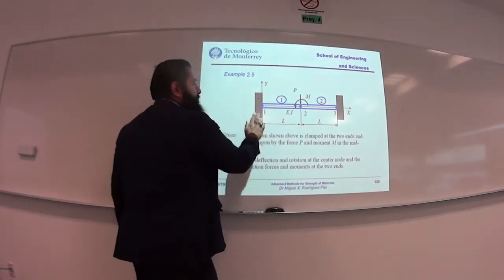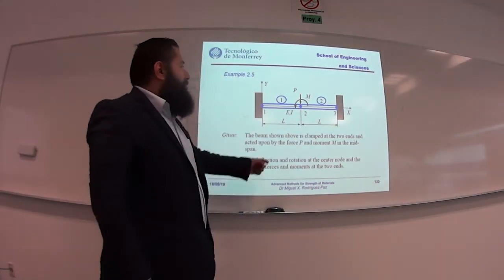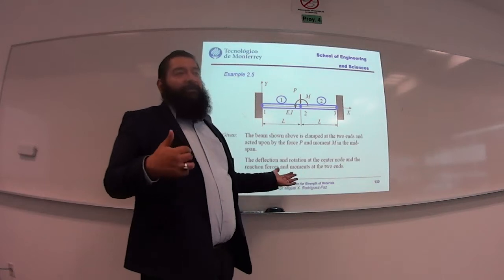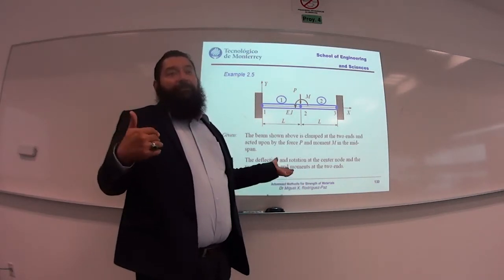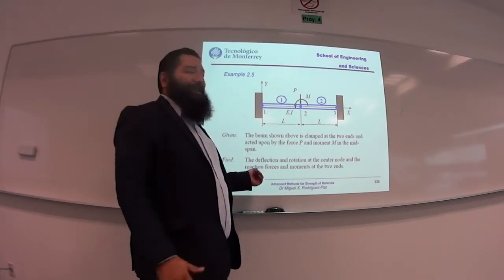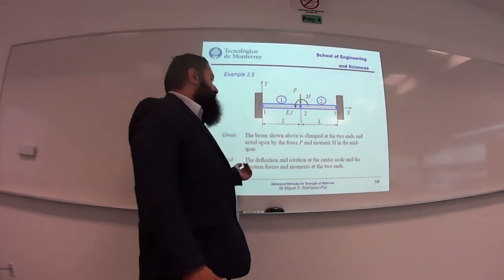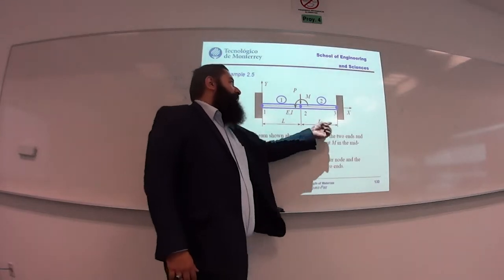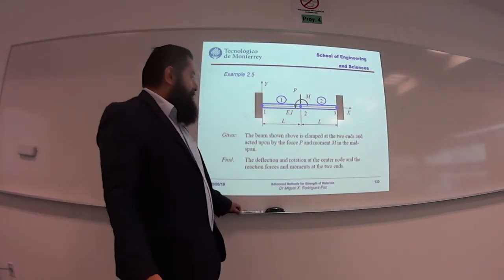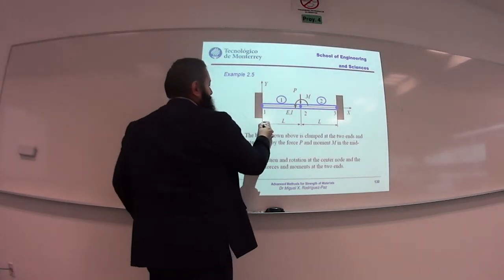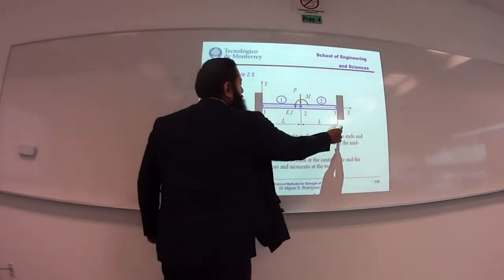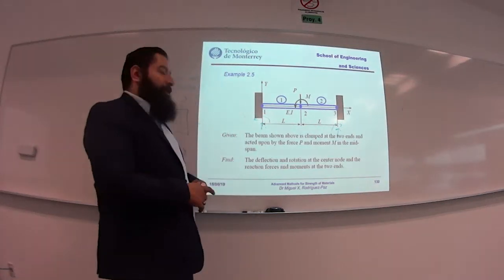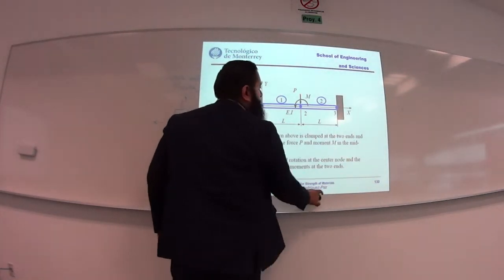We have two elements, two supports, one internal node, a moment applied there, and also an external force P. This is a statically indeterminate problem — we cannot solve it by hand using just statics. You will see how easy it is to solve it with the finite element method. The goal is to find the deflection and rotation at the center node, and the reaction forces and moments at the two ends. Using the beam element without axial rigidity, we have one vertical reaction and one moment at each end — four reactions total.